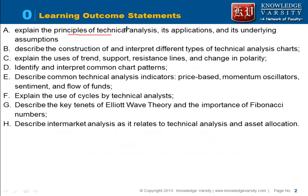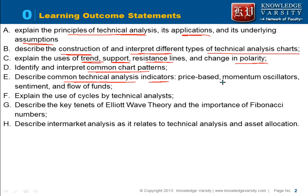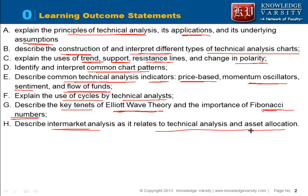The first learning outcome is to explain the principles of technical analysis, its application and assumptions. Then, construction and interpretation of different types of charts in technical analysis. Then, use of trend, support, resistance lines and changes in polarity. Identify and interpret common chart patterns, common technical analysis indicators, price-based movement, oscillators, sentiments and flow of funds. The use of cycles by technical analysts, key tenets of Elliott Wave Theory, and the importance of Fibonacci numbers. Finally, describing technical analysis as it relates to asset allocation.